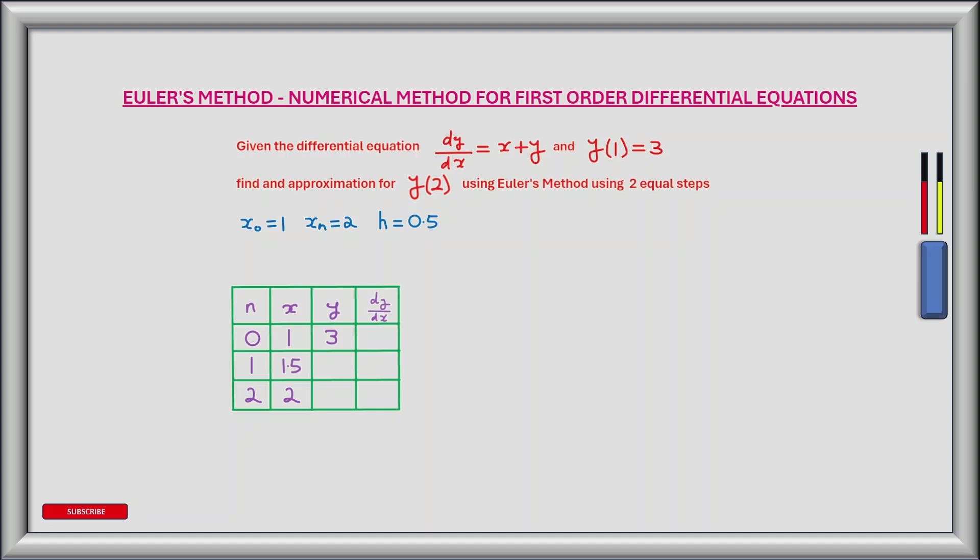So the x column starts at 1, which is our initial condition, and then increases by 0.5 until we get to x equals 2. For the y column we only have the initial condition of 3, and at the moment we are at n equals 0.